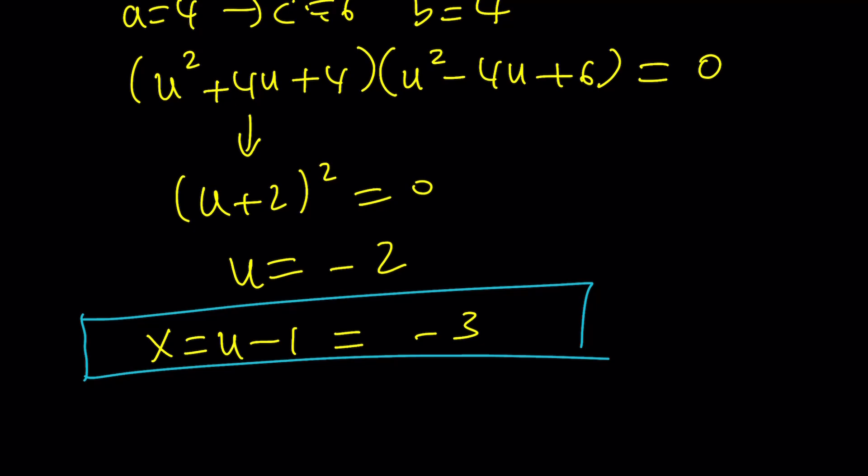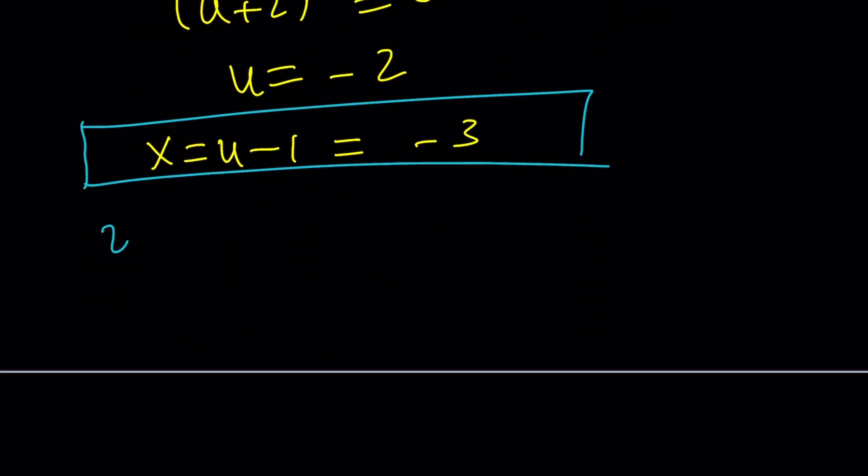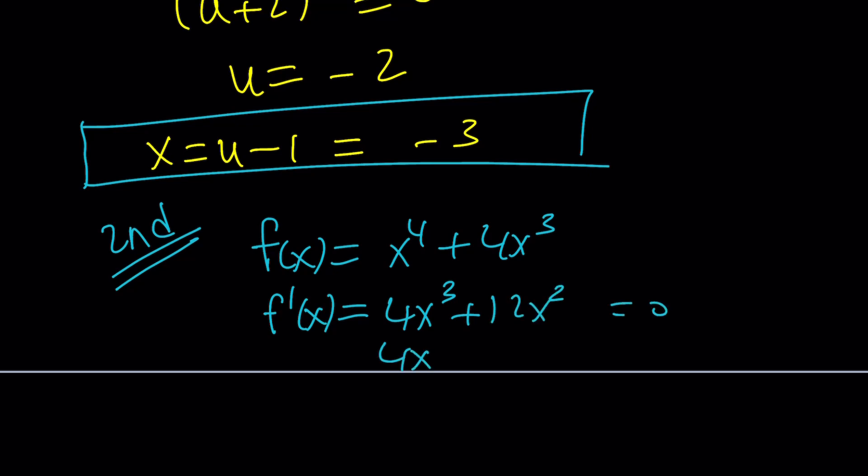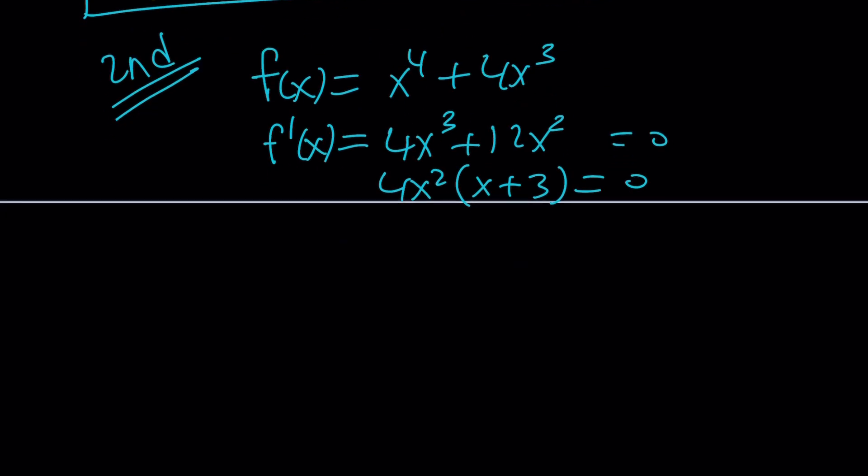Now let's look at an alternative method, which is kind of nice. Obviously, this is not always applicable, but it's always worthwhile to check. Suppose f of x is defined as x to the 4th plus 4x cubed. Let's differentiate it. It's worthwhile to check the maxima and minima in these scenarios. 4x cubed plus 12x squared, then set it equal to 0. Factor 4x squared, you're going to get x plus 3, and then make a table.